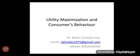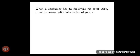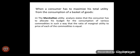Hello viewers. In this presentation we explain utility maximization and consumer's behavior. When a consumer has to maximize his total utility from the consumption of a basket of goods, the Marshallian Utility Analysis states that the consumer has to allocate his budget for the consumption of various commodities in such a way that the ratio of marginal utility to price of each of the commodities is equal.